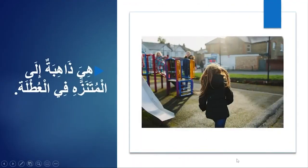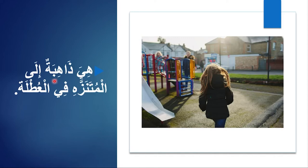هي ذاهبة إلى المتنزه في العطلة — 'She is going to the park on the weekend.' You have to understand that when you are speaking about a female, a girl or a woman, you have to use تاء مربوطة for the اسم فاعل. So ذاهبة for a girl, and ذاهب for a boy.